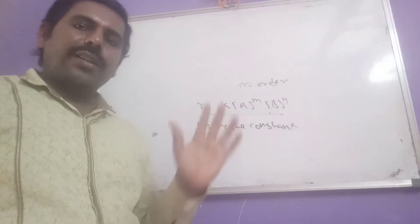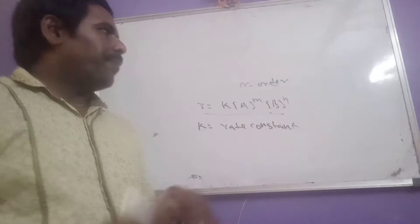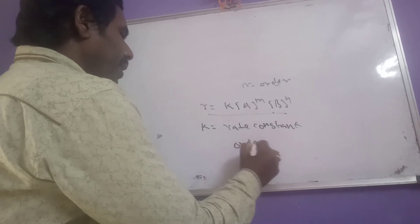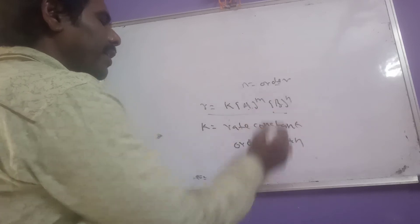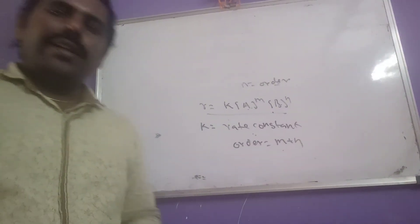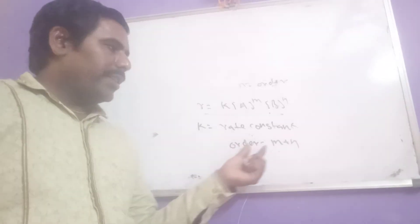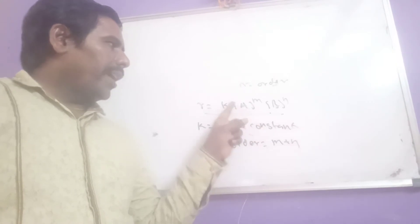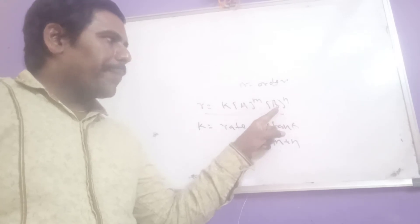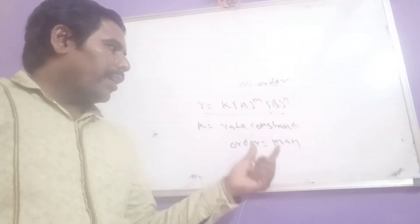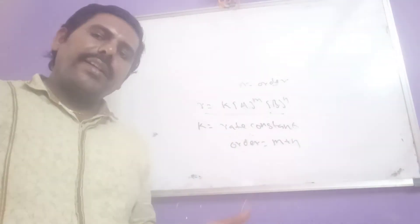What is order? The sum of the powers of the concentration terms of reactants in the rate equation is known as order. For the reaction mA + nB → products, the overall order is m + n. With respect to A, the order is m; with respect to B, the order is n. The overall order of the reaction is m + n.